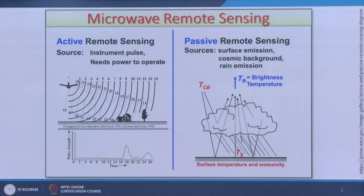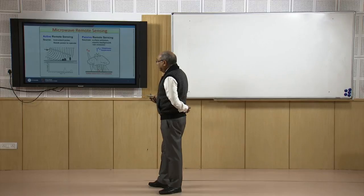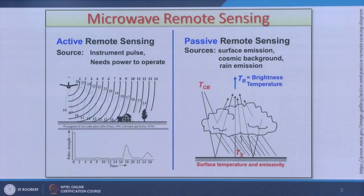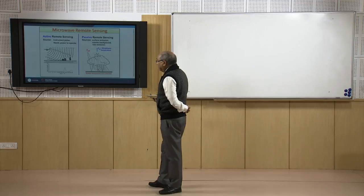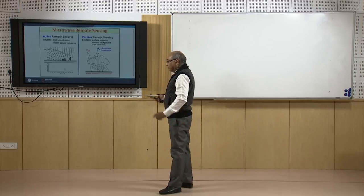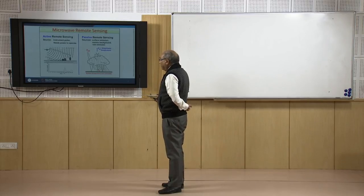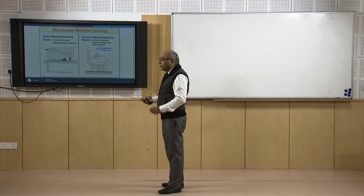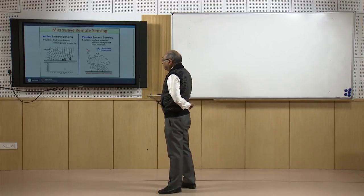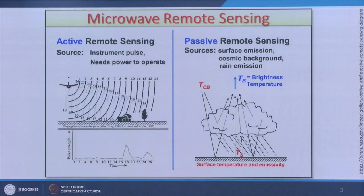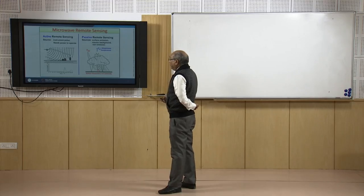In active radar remote sensing, the instrument sends a pulse — shown here with an aircraft, but we can also assume a satellite — and whatever is backscattered after interacting with different objects on the surface of the earth is returned and recorded. Based on this, distances are measured, which is basically a ranging technique. We ultimately create, through complex numbers, an image which we call a radar image. The travel time gives us the distance of different objects.